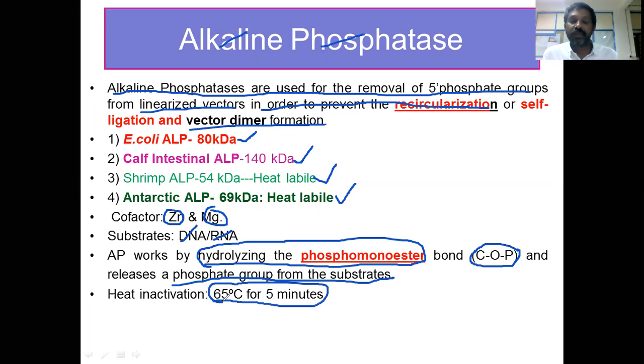These days scientists prefer shrimp alkaline phosphatase and Antarctic alkaline phosphatase because they are heat labile. The dephosphorylation reaction can be quickly inhibited, and downstream reactions will have no problems when using these enzymes.